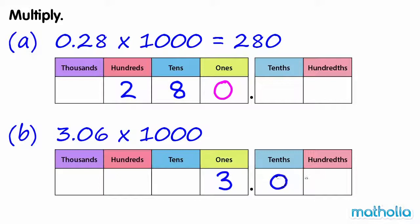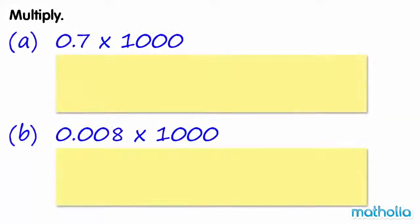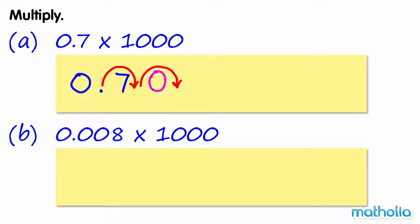Now, 3.06 times 1000. Write 3.06 in the place value chart and shift the digits three places to the left. 3.06 times 1000 equals three thousand and sixty.